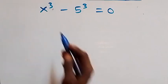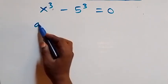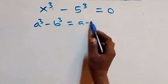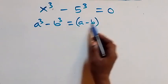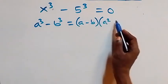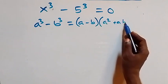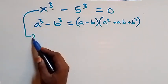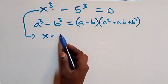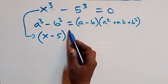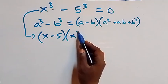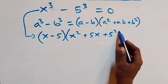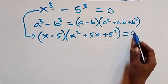Solving the second case, x cubed minus 5 cubed equals zero, we apply the difference of cubes formula: a cubed minus b cubed equals a minus b times open bracket a squared plus ab plus b squared. This becomes x minus 5 times open bracket x squared plus 5x plus 25 close bracket equals zero.